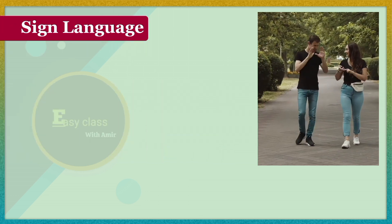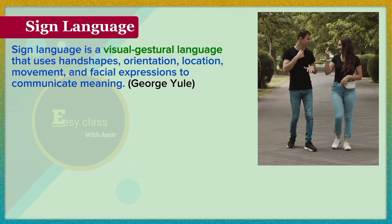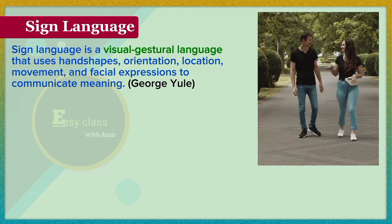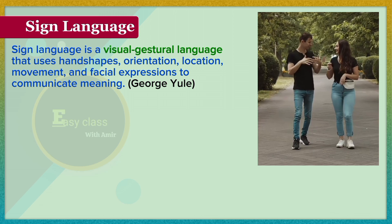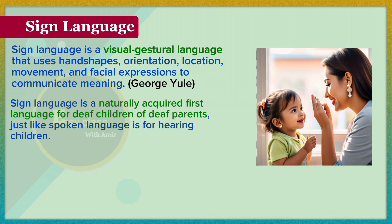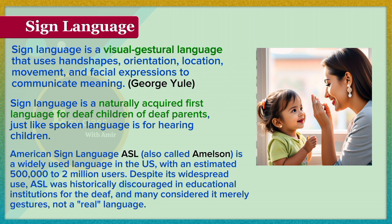George Ewell defines sign language as a visual gestural language that uses handshapes, orientation, location, movement, and facial expressions to communicate meaning. Sign language is a naturally acquired first language for deaf children of deaf parents, just like spoken language is for hearing children. American Sign Language, ASL, also called Amilson, is a widely used language in the US, with an estimated 500,000 to 2 million users.